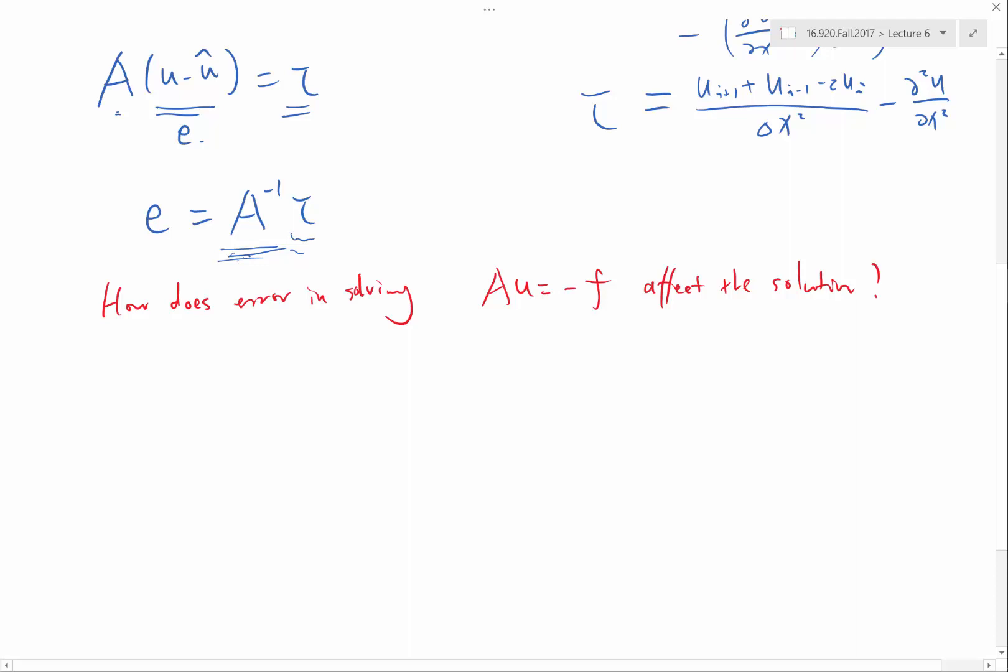So when we are not solving the system exactly, we would be solving the system with a certain residual. The so-called residual is we solve A times u plus f would be equal to a small residual.